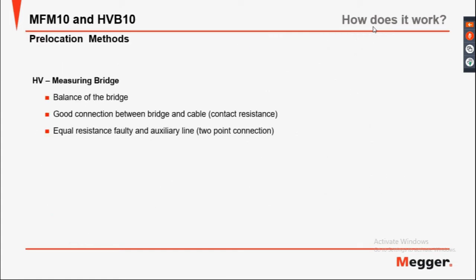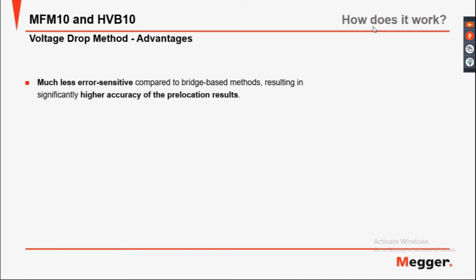Communication methods: the high-voltage measuring bridge works by balancing the bridge circuit with good connections between the bridge and cable, and equal resistance in the faulty and auxiliary conductors. The volt-volt method measures both areas of the fault. Advantages of the volt-volt method include being much less error-sensitive compared to bridge-based methods, resulting in significantly higher accuracy for pre-location results.